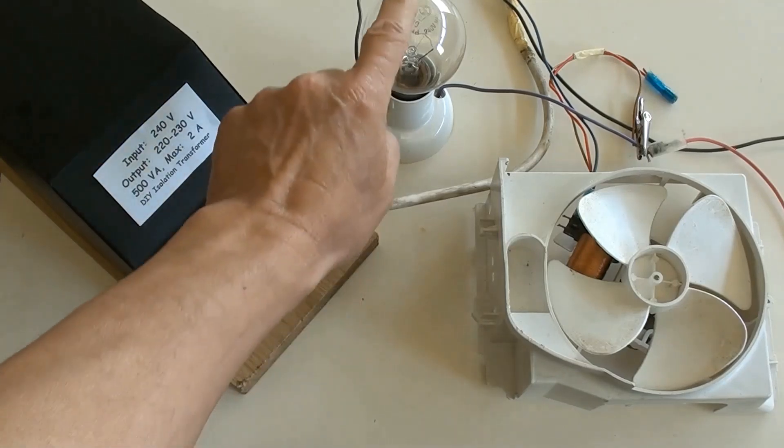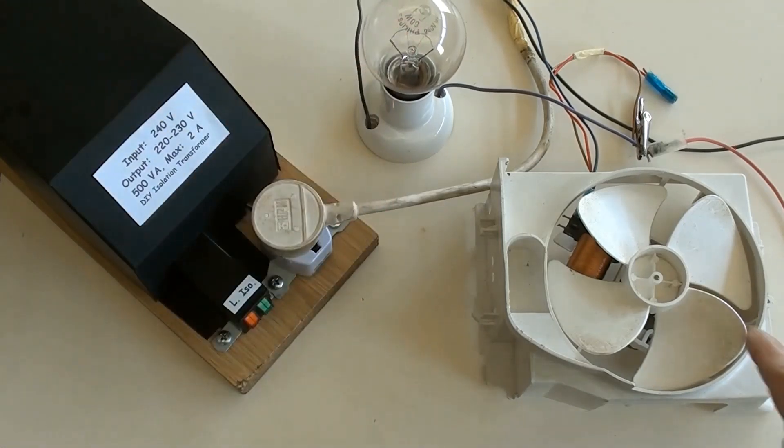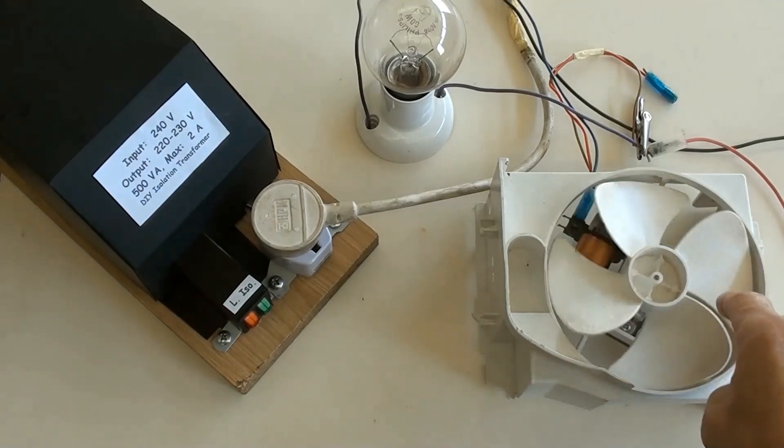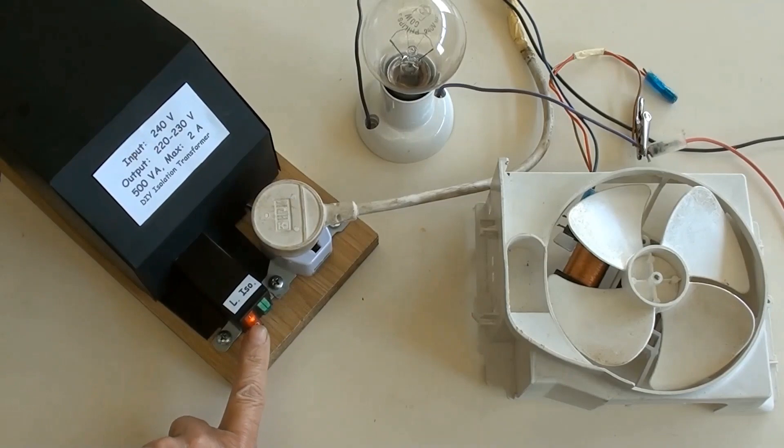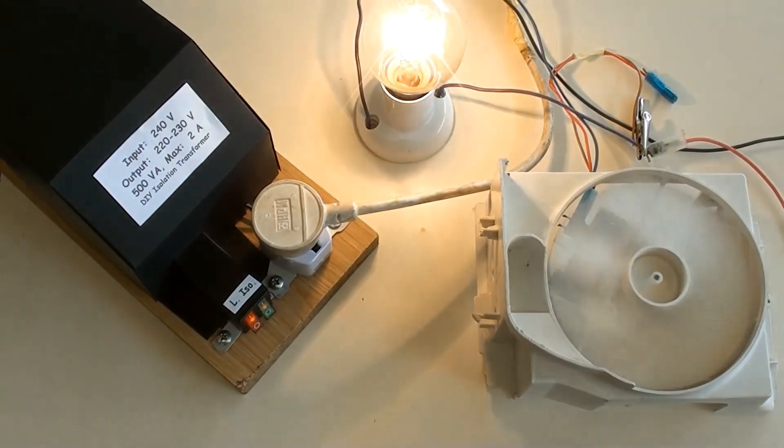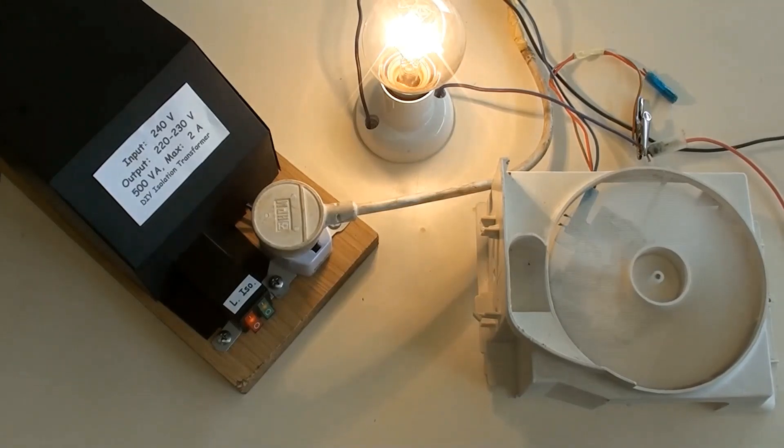Now the whole thing is ready for load testing. The isolation socket has been connected to a globe, and a fan is the load. Switched live switch on then its LED on. Switched isolation switch on then its LED on. The globe and fan working well.